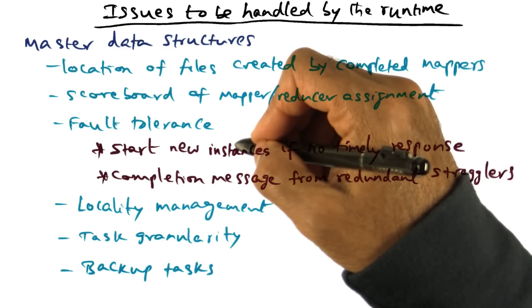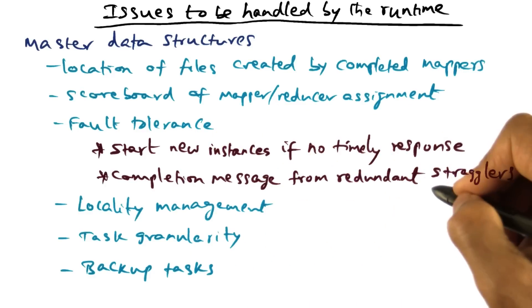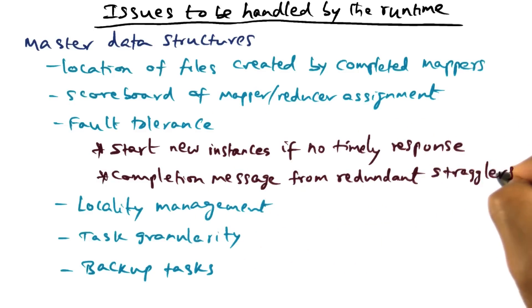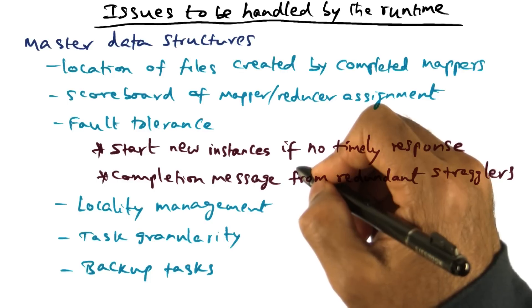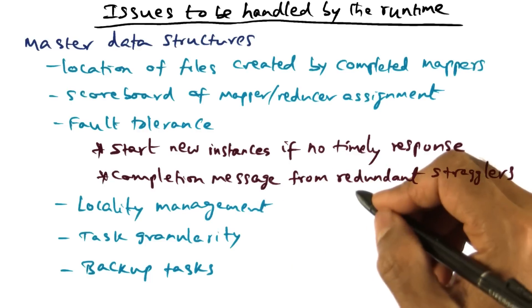Now when that happens, it is possible that the original mapper is actually dead, or it could be that it was just slow. In that case, you could get completion message from more than one mapper for the same split. So when you get multiple completion messages from redundant stragglers, the master has to be able to filter them out and say, this is something that is redundant work, I don't have to care about that. So that's part of fault tolerance that the master has to worry about.